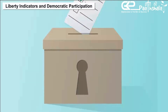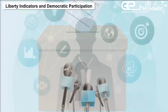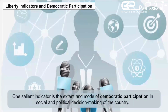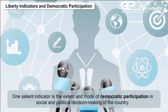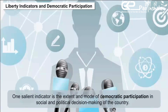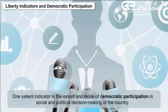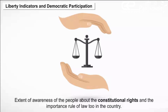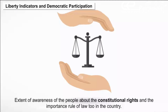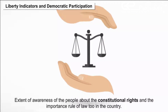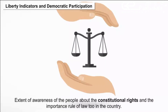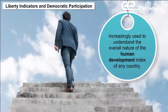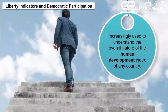Liberty Indicators and Democratic Participation. In order to measure human development in a country, one salient indicator is the extent and mode of democratic participation in social and political decision-making. This also includes the extent of awareness of the people about constitutional rights and the importance of rule of law. These factors in modern times are increasingly used to understand the overall nature of the Human Development Index of any country.